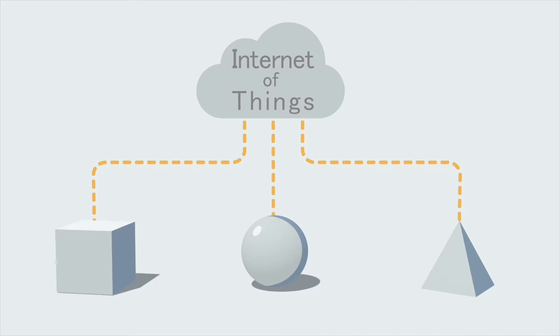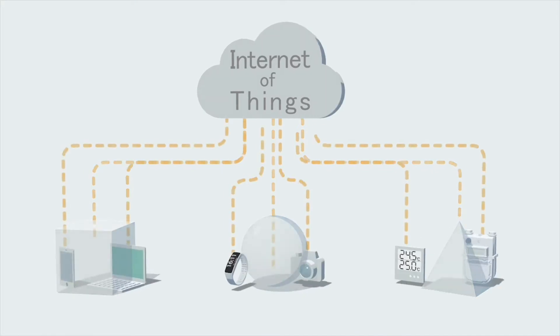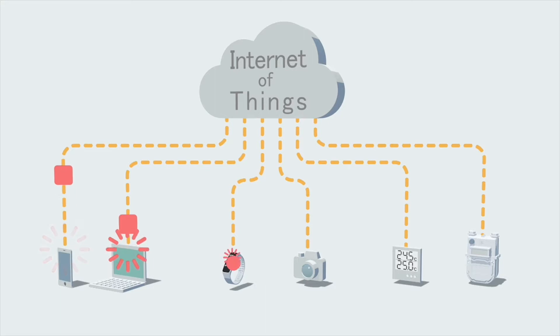These things include wearable devices, metering devices, and environmental sensors. They are expected to eventually grow to over ten times the world's population, or trillions of devices.